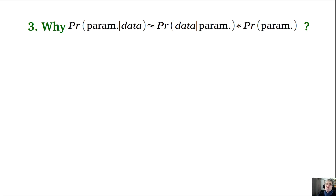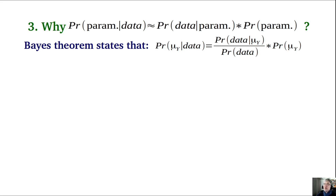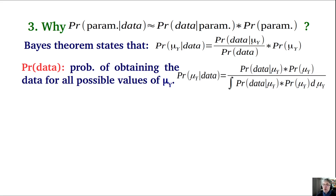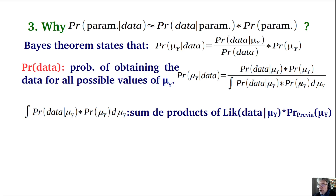Why is the posterior simplified by dropping the denominator? The denominator is the probability of obtaining the data for all possible values of mu. To obtain it, we compute the integral — a sum over different values of mu — of the likelihood times the prior. This is simply the sum of products of likelihood times prior, which once computed becomes just a number: a scaling factor.